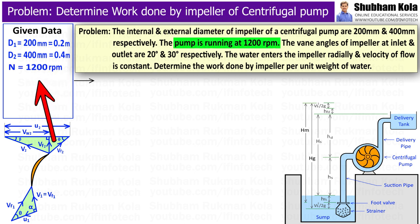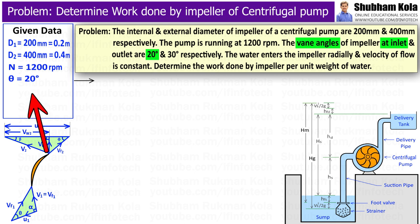Rotational speed of impeller, N, equal to 1200 rpm. The blade angle at inlet, theta, is given as 20 degree. And blade angle at outlet, phi, is given as 30 degree.